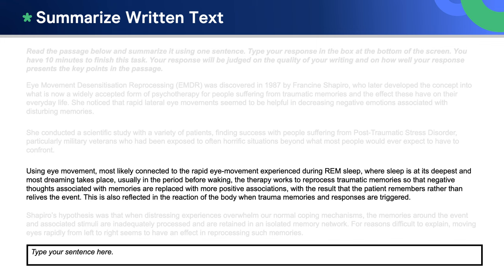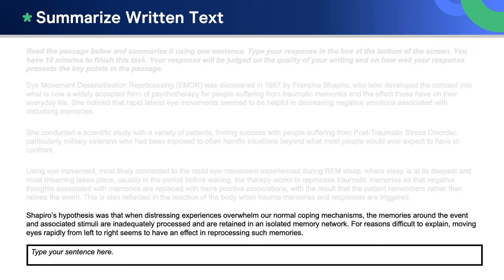The therapy works to reprocess traumatic memories so that negative thoughts associated with memories are replaced with more positive associations, with the result that the patient remembers rather than relives the event. This is also reflected in the reaction of the body when trauma memories and responses are triggered.